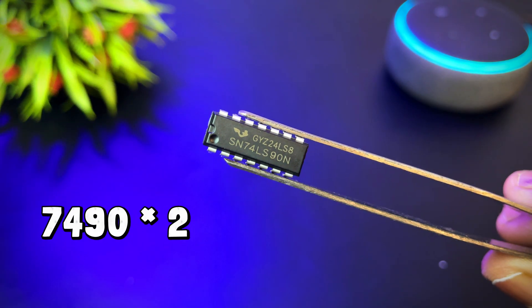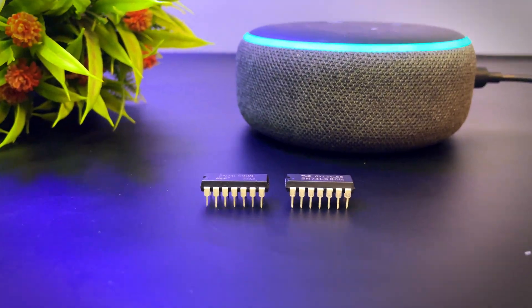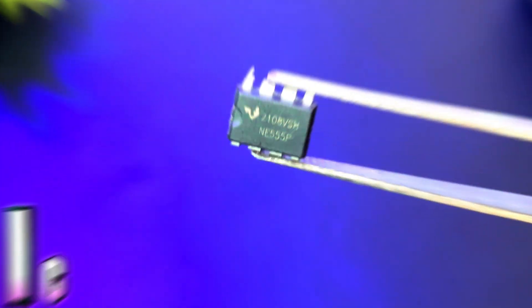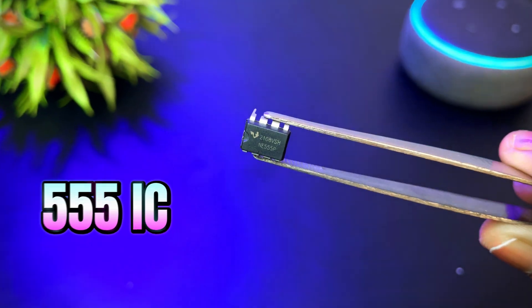So, this is our BCD decade counter. It counts from 0 to 9 in binary. This is 555 timer IC. It is used to generate clock pulses.